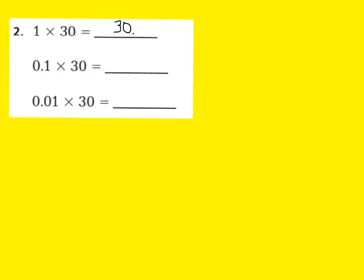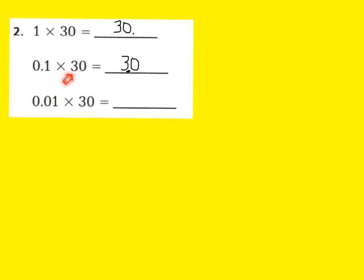Now, if I were to multiply 30 by 1 tenth, 1 tenth of 30, I know that this is a decreasing power of 10, which means my product will have to be decreased — it must be less than 30, because 1 tenth of 30 is less than 30. This is the pattern we're going to do. I'm going to write 30 down right here, but instead of having my decimal point after the 1's place, I'm going to move the decimal point 1 place to the left. Now you can see I have 3 wholes, and that makes sense — 1 tenth of 30 would be 3.